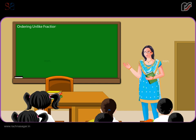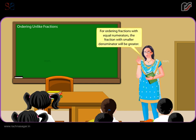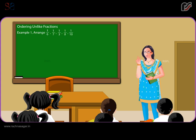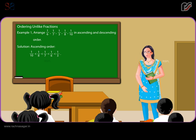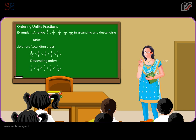Ordering unlike fractions. For fractions with equal numerators, the fraction with the smaller denominator will be greater. Example 1: Arrange 1 by 6, 1 by 7, 1 by 3, 1 by 8, 1 by 10 in ascending and descending order. Ascending order: 1 by 10 < 1 by 8 < 1 by 7 < 1 by 6 < 1 by 3. Descending order: 1 by 3 > 1 by 6 > 1 by 7 > 1 by 8 > 1 by 10.